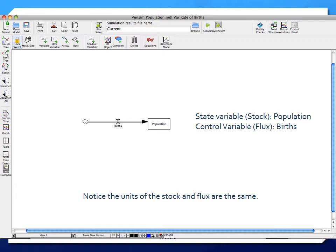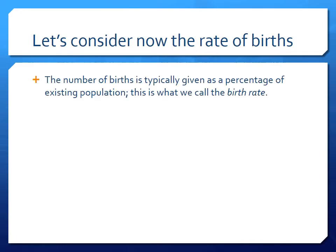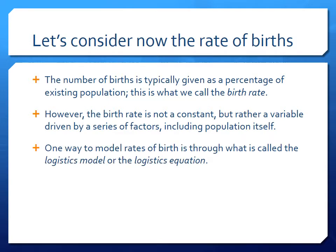Let's take a closer look at the rate of births. Typically the rate of births is given as a percentage of the existing population — this is what we call the birth rate. This birth rate is not a constant; it's actually a variable that changes over time and is influenced by a series of factors including population itself. One way to model birth rates is through what we call the logistic model or logistic equation.